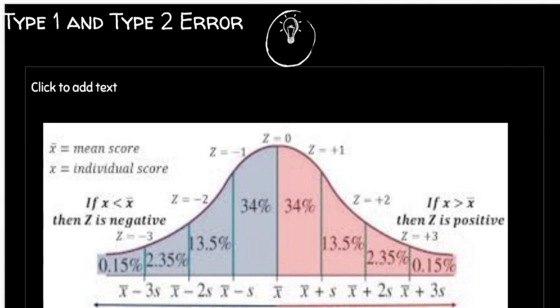One standard deviation covers approximately 68% of the data — 34% on each side of the mean. Two standard deviations add 13.5% on each side, and three standard deviations add another 2.35%. These percentages represent the area under the normal distribution curve within each range.